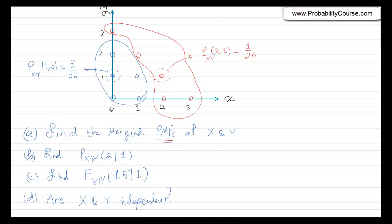The blue points each have probability 3/20, and the remaining five points each have probability 1/20. We want to find: the marginal PMFs of X and Y; P_{X|Y}(2 | 1); F_{X|Y}(1.5 | 1), which is the probability that X ≤ 1.5 given Y = 1; and whether X and Y are independent. Try solving this before watching the rest of the video.